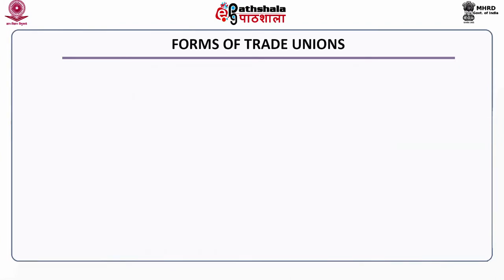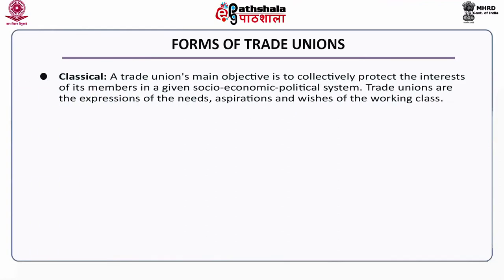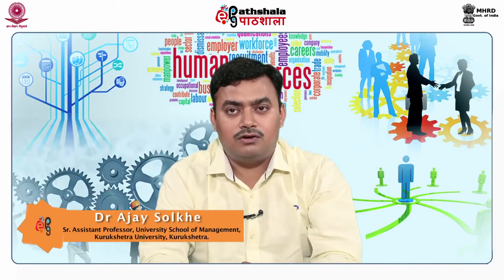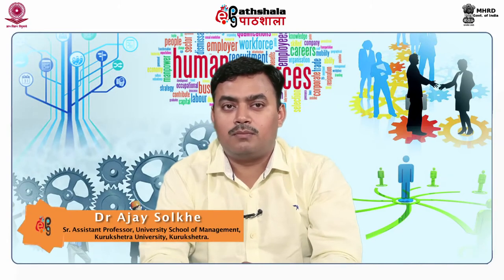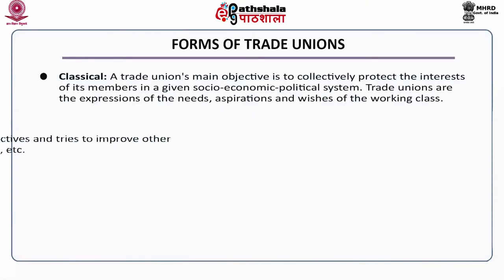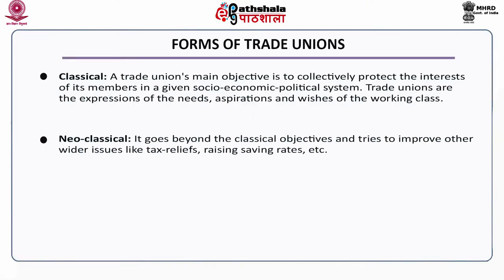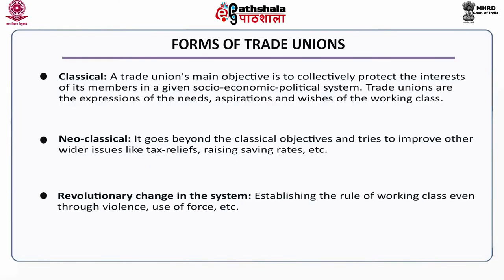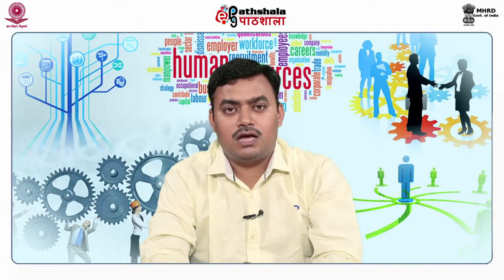With regard to the forms of trade union, the very first is the classical trade union. A trade union's main objective is to collectively protect the interest of its members in a given socio-economic political system. Trade unions are the expressions of the needs, aspirations and wishes of the working class. Secondly, we have neoclassical, which goes beyond classical objectives and tries to improve other wider issues like tax reliefs, raising saving rates, etc. Thirdly, revolutionary — establishing the rule of the working class even through violence, use of force, etc.